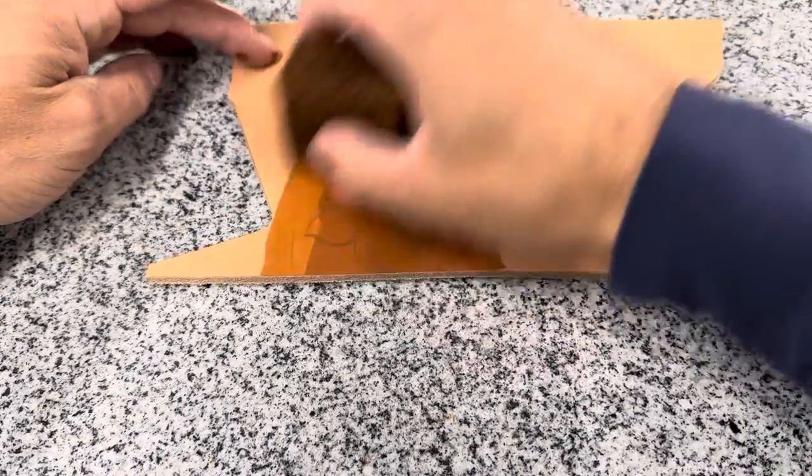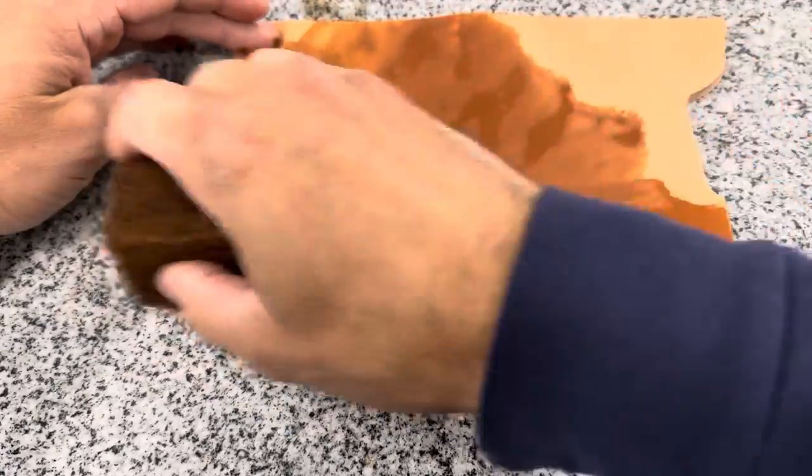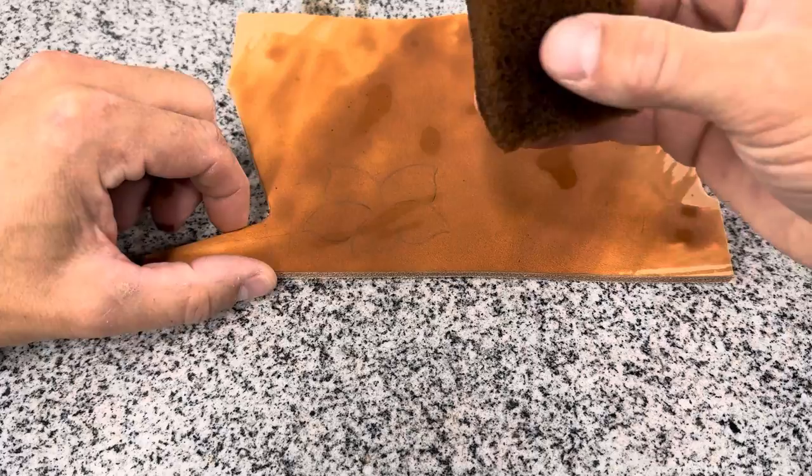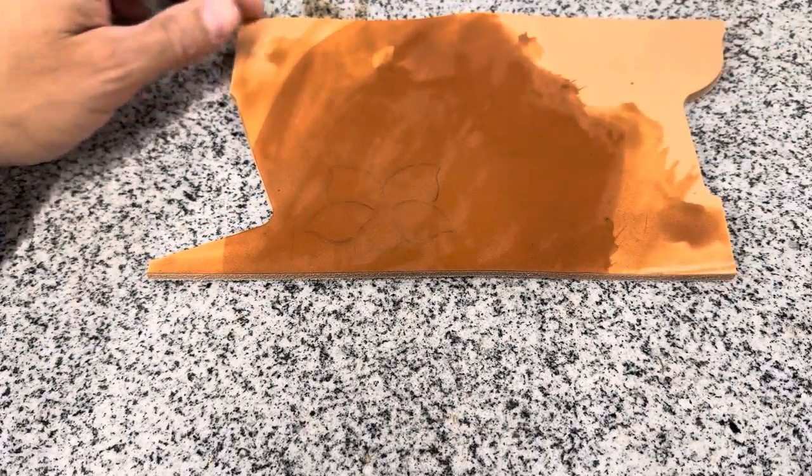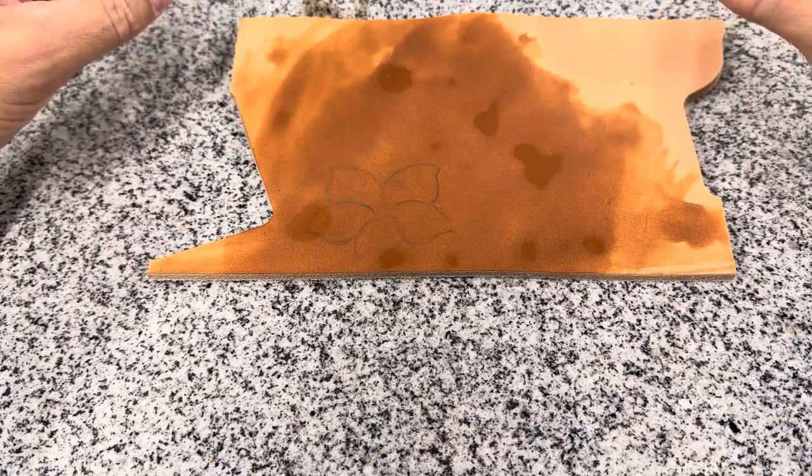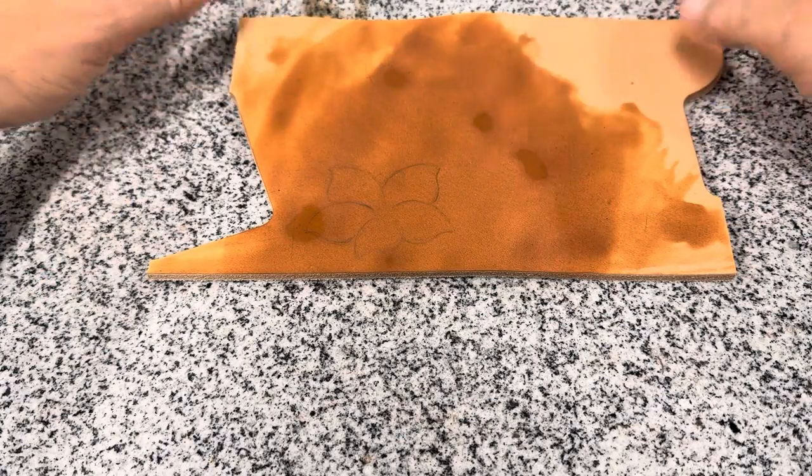Now I did say veg tan leather so there's a difference between veg tan leather like this which is going to accept moisture. This is just water on a sponge that I'm wetting that down with which is going to be step one to our tooling process.